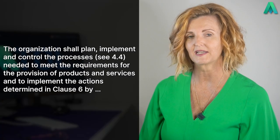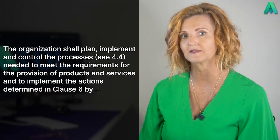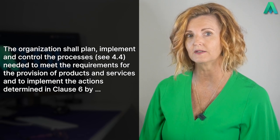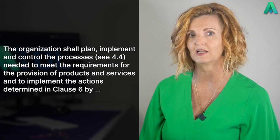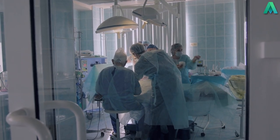This clause starts off with the statement: the organization shall plan, implement, and control the processes — see 4.4 — needed to meet the requirements for the provision of products and services and to implement the actions determined in clause 6. We are at the operation part of the standard where the focus shifts from the higher-level system to the operation stage relevant to your product or service.